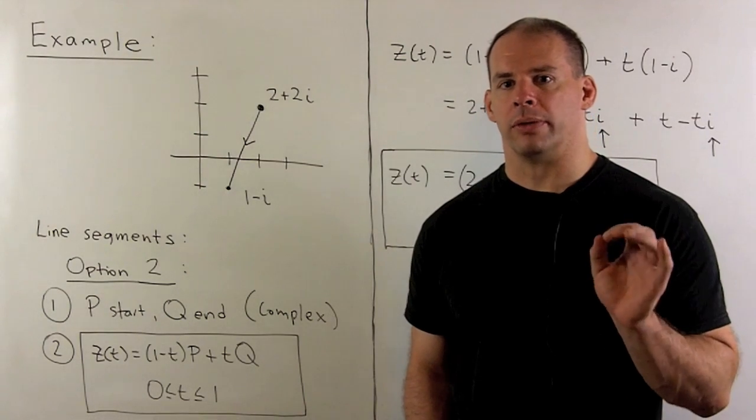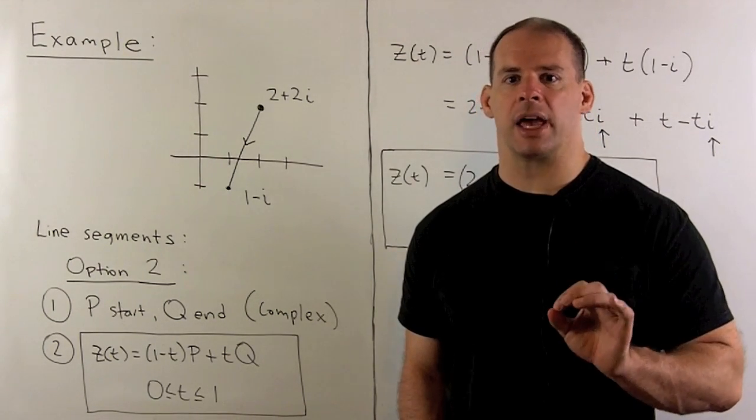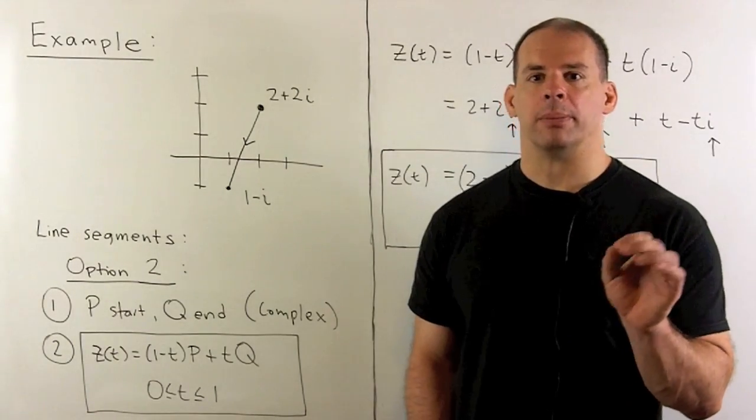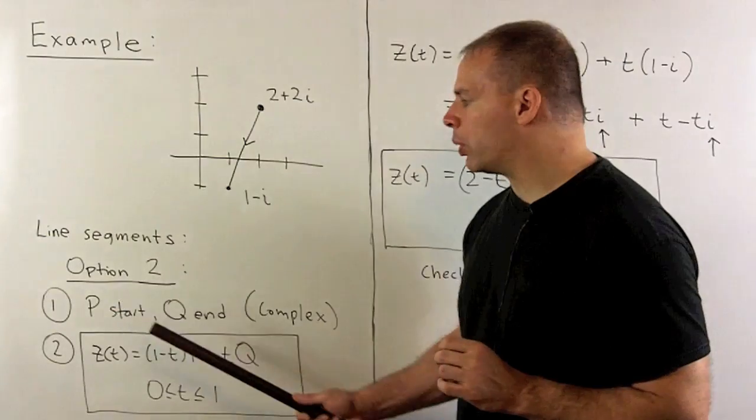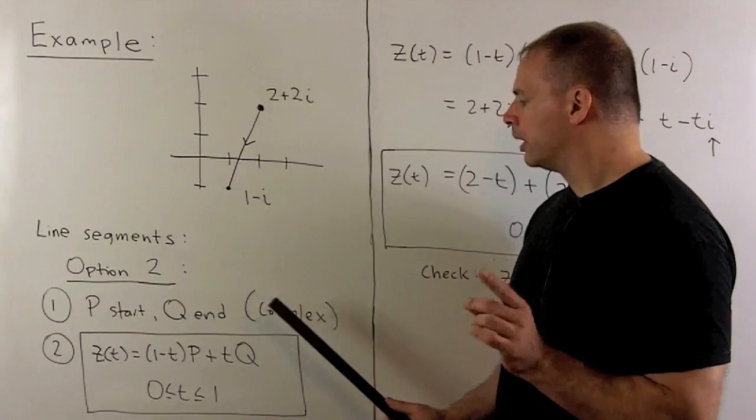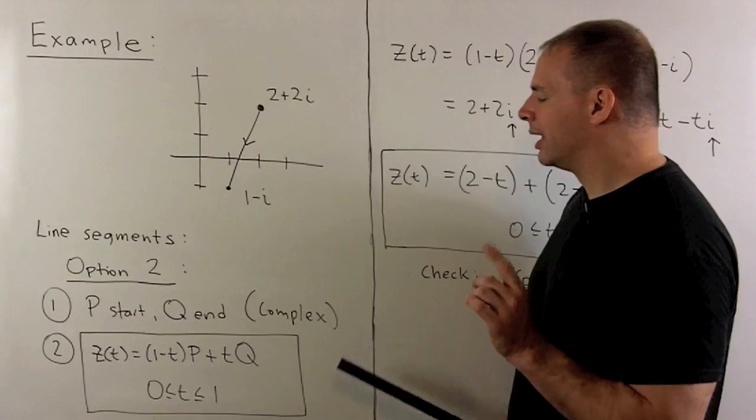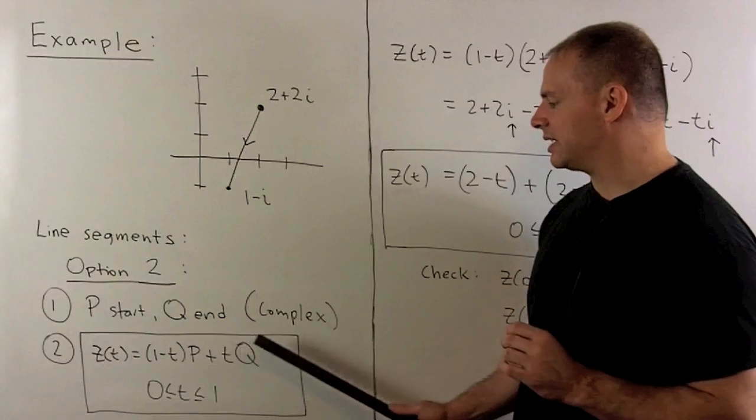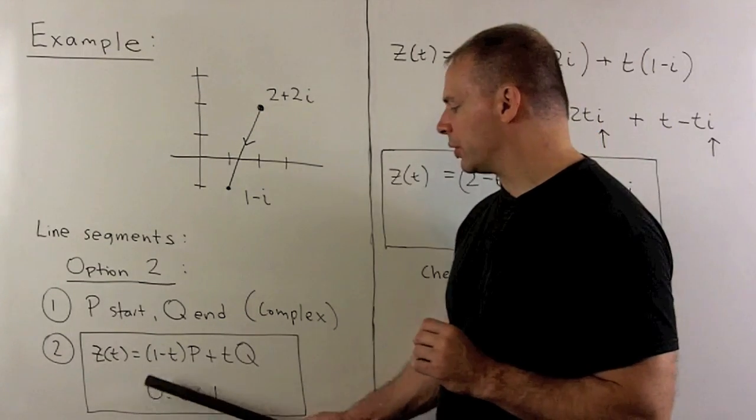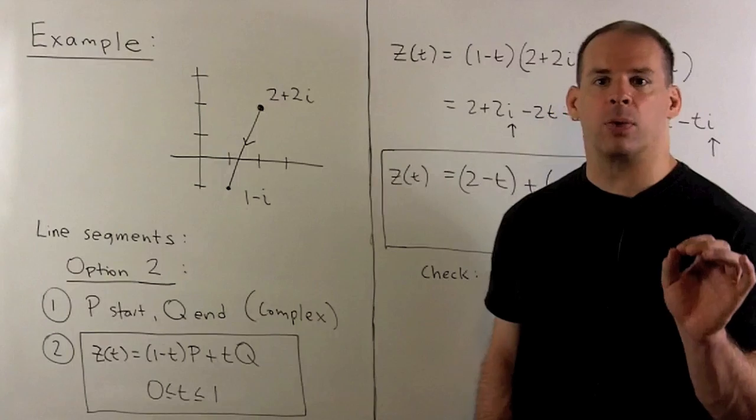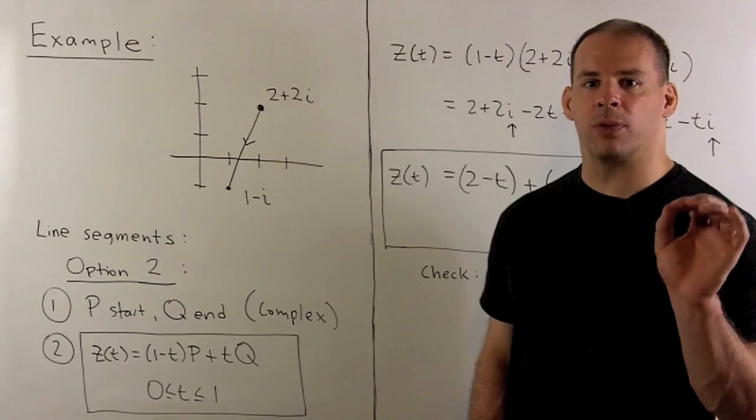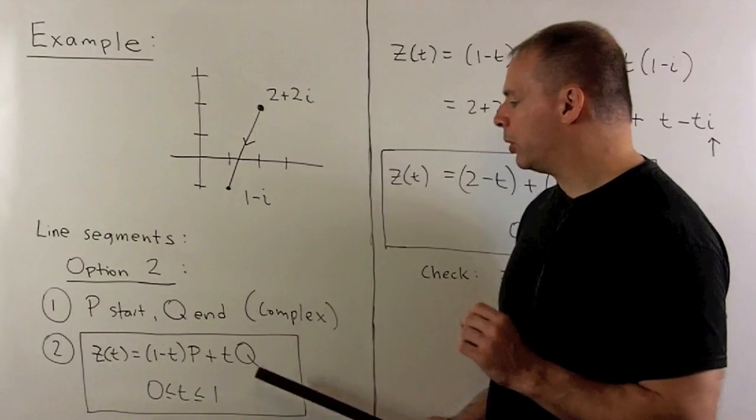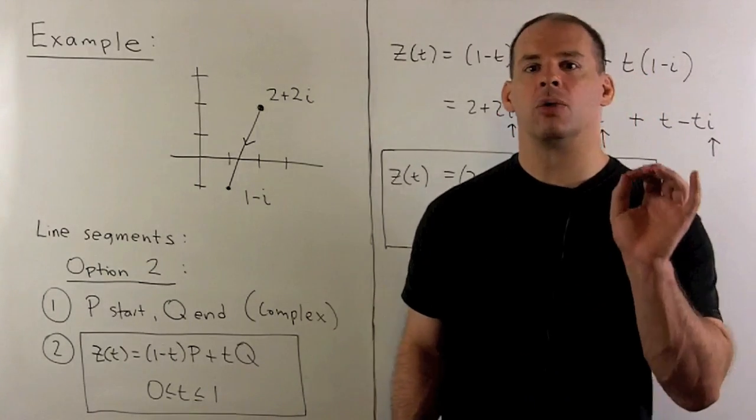Now, if you're comfortable with vectors, there's a better way to parametrize line segments. And it puts it directly in complex form. So, the recipe is, you identify your start point p, your end point q. And these are going to be in complex form. Then, z of t is going to be equal to 1 minus t times p plus t times q. Then, t is going to run from 0 to 1. One advantage of this form, it's already in complex form. And it will be oriented. So, if we put in 0, we get p. If I put in 1, I get q. So, we have p running to q.